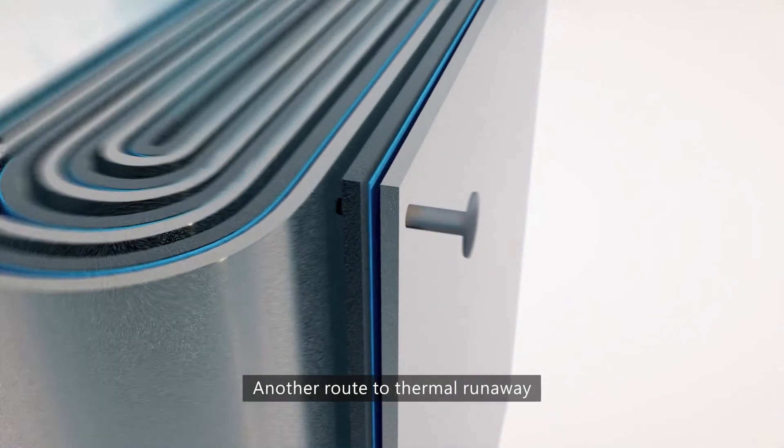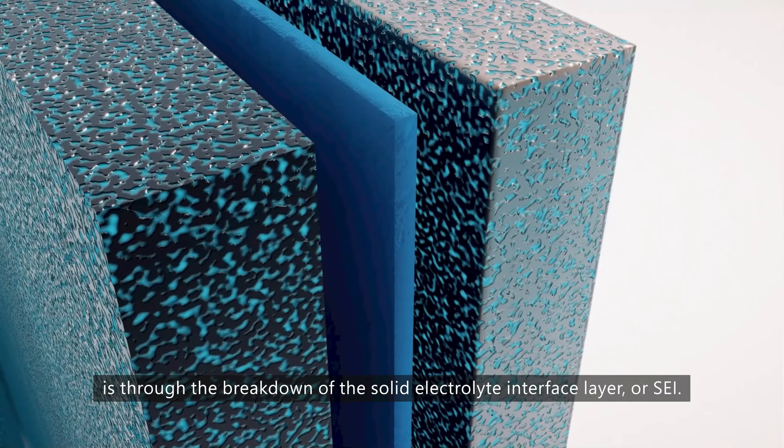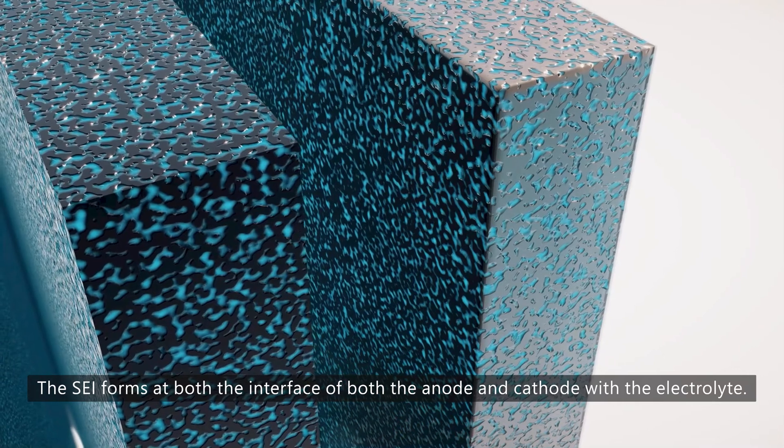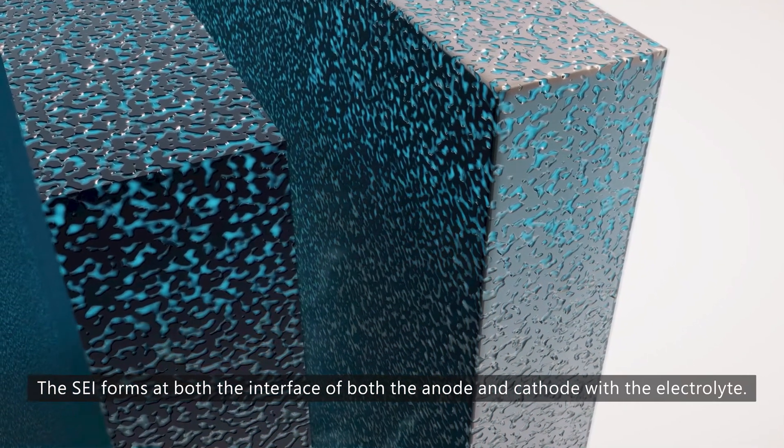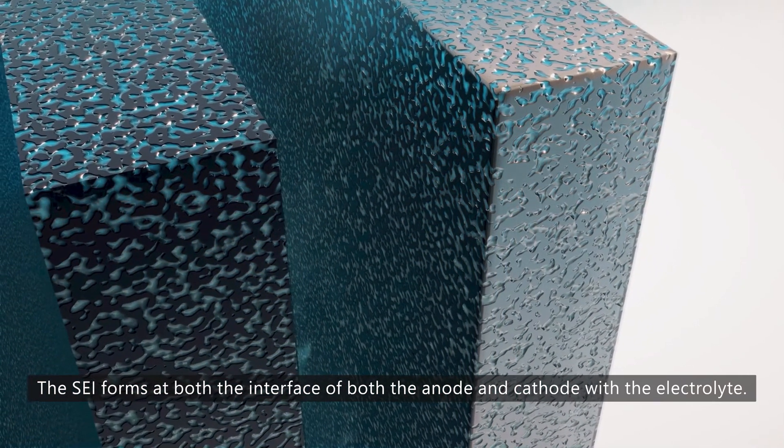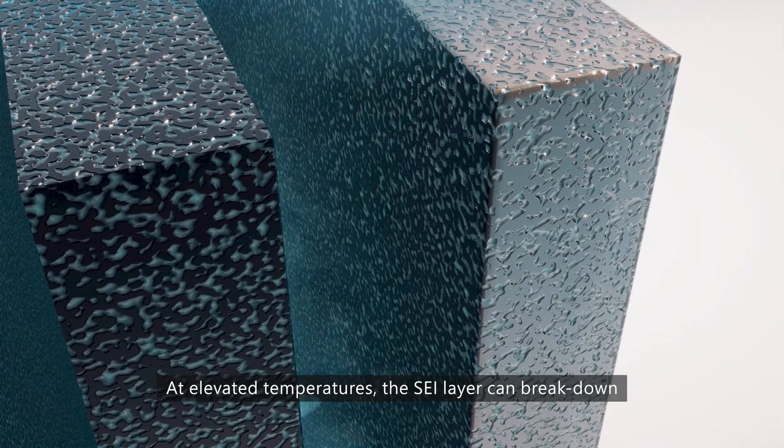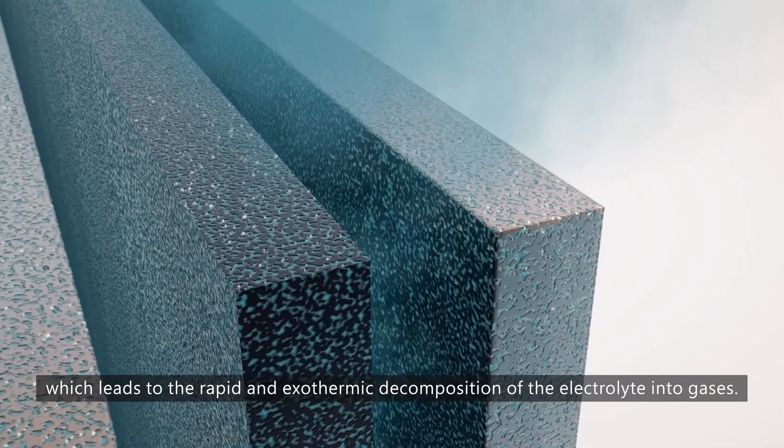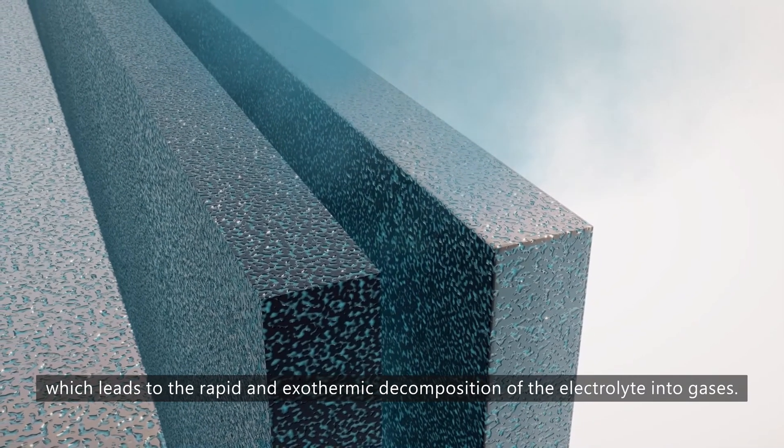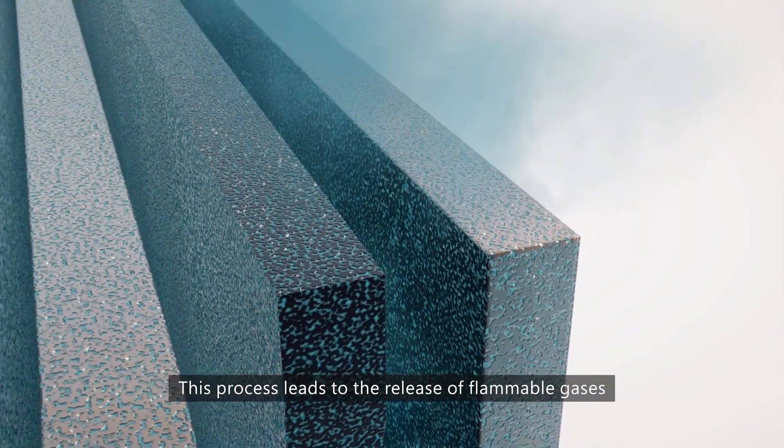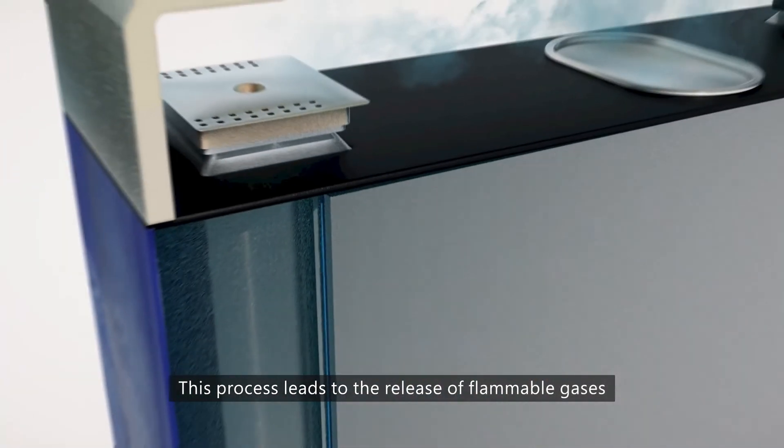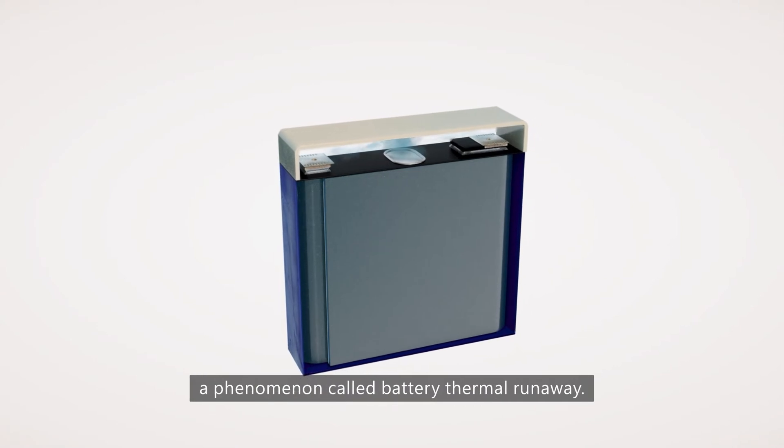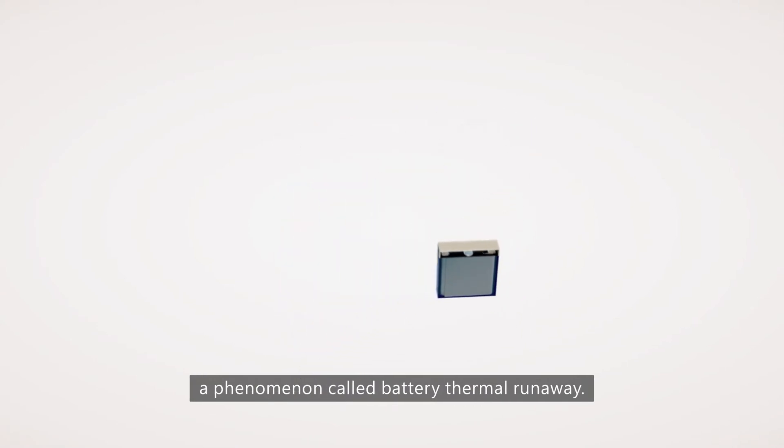Another route to thermal runaway is through the breakdown of the solid electrolyte interface layer, or SEI. The SEI forms at the interface of both the anode and cathode with the electrolyte. At elevated temperatures, the SEI layer can break down, which leads to the rapid and exothermic decomposition of the electrolyte into gases. This process leads to the release of flammable gases and a rapid increase in battery temperature, a phenomenon called battery thermal runaway.